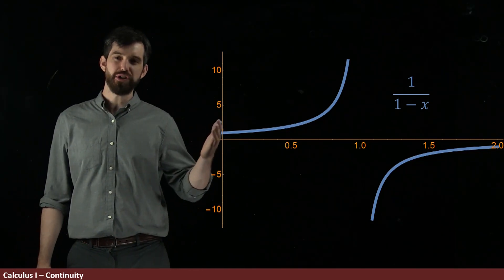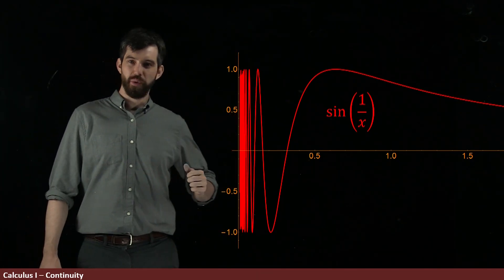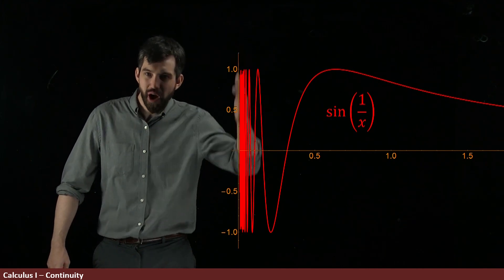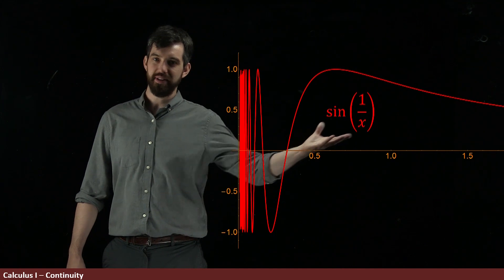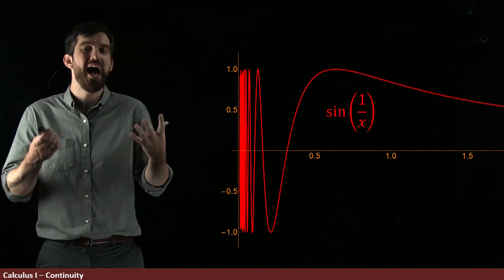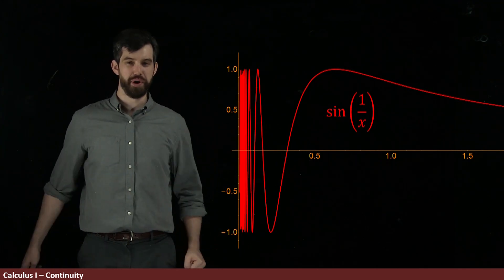And then finally, I want to show you this function, the sine of 1 over x. We've seen that as well, where we're also not going to have a limit. We've got this infinite oscillation at this particular point, and the sine of 1 over 0 is not even defined, so you also have this sort of weirdness going on.